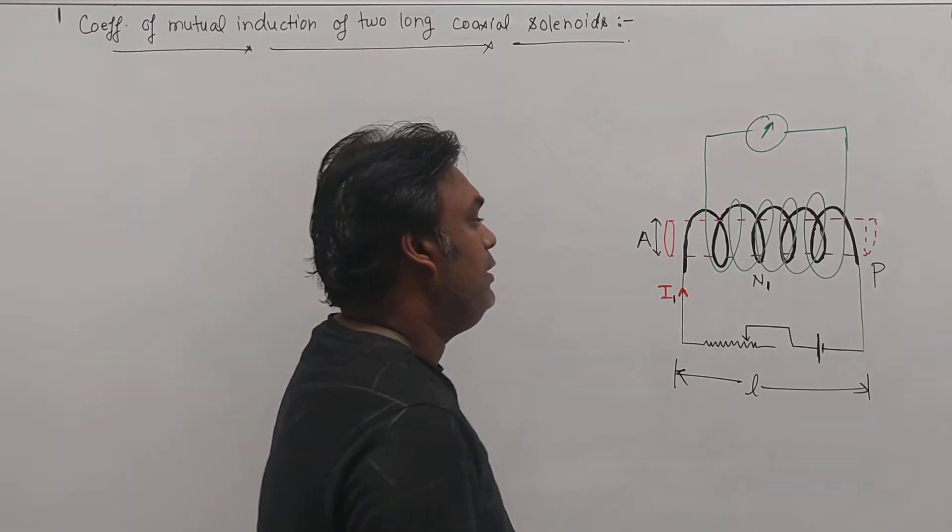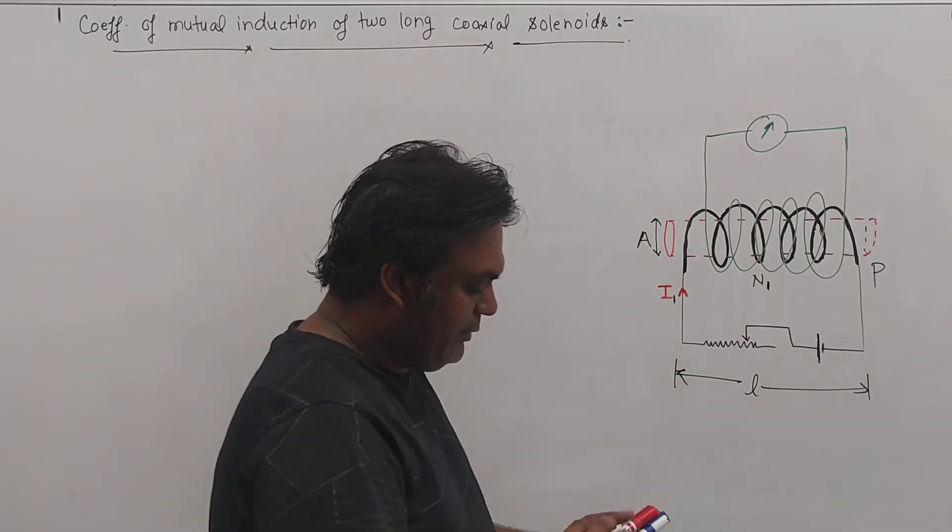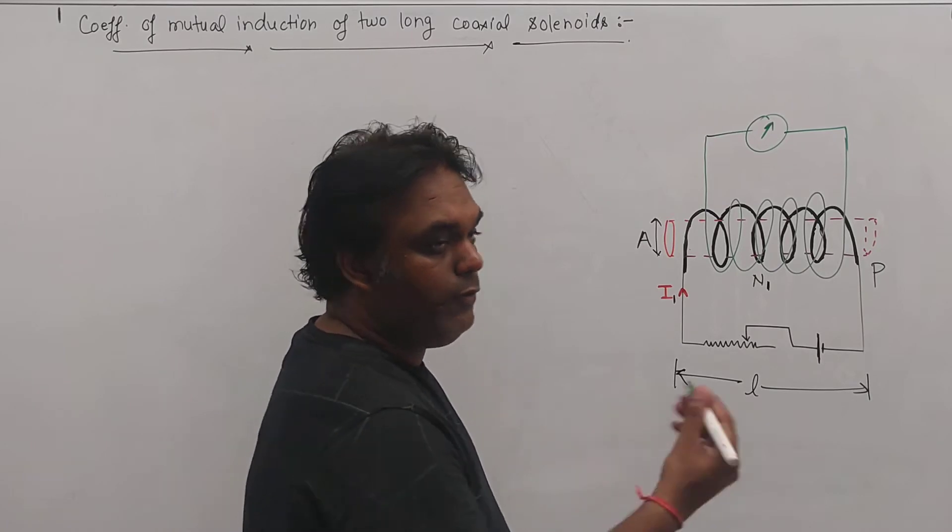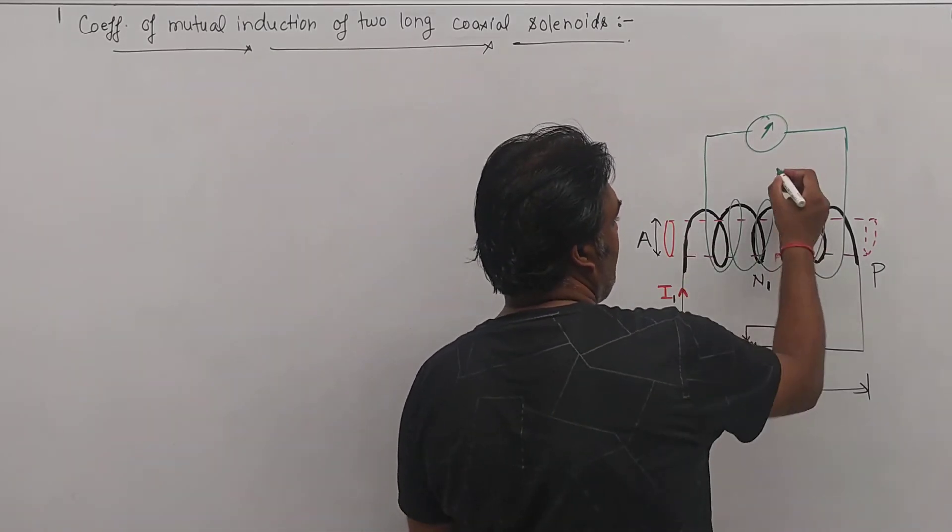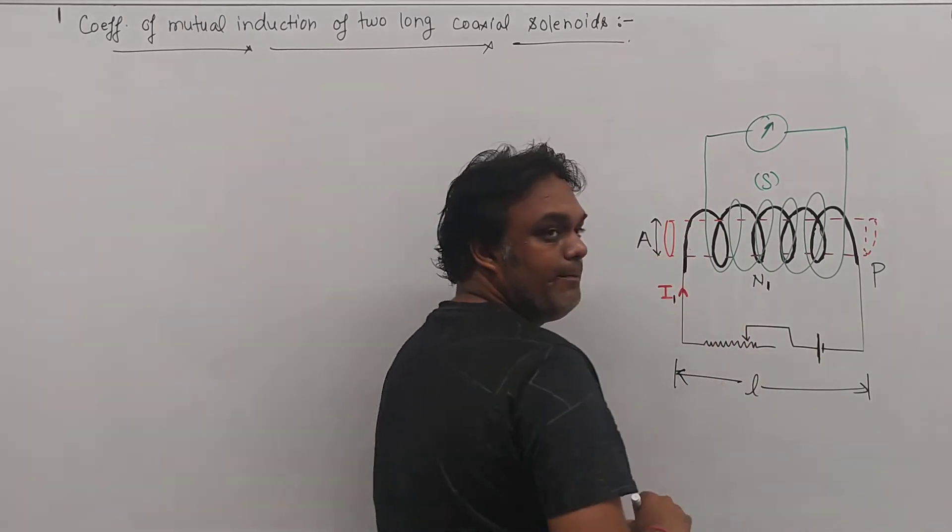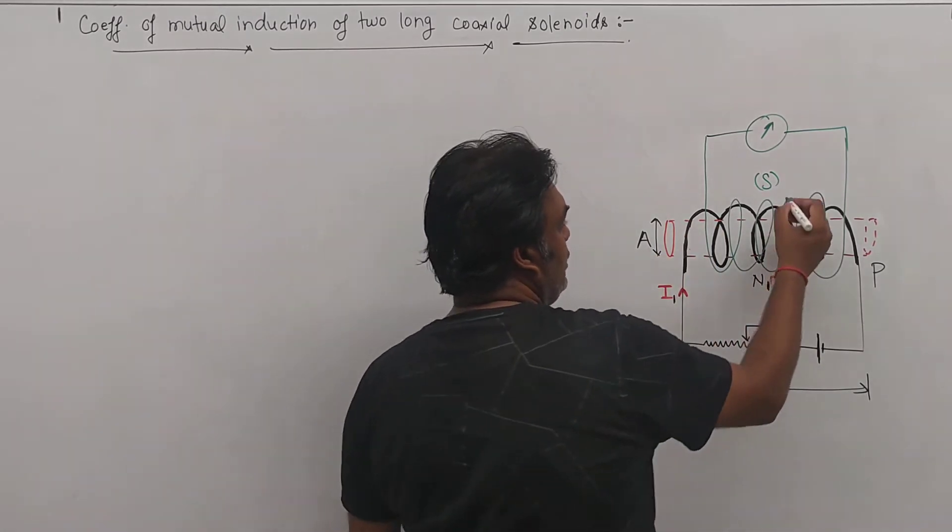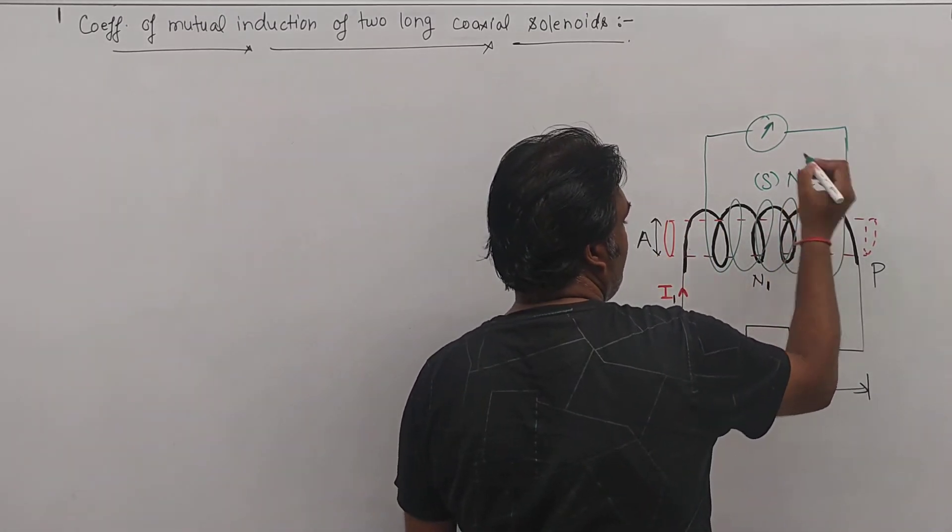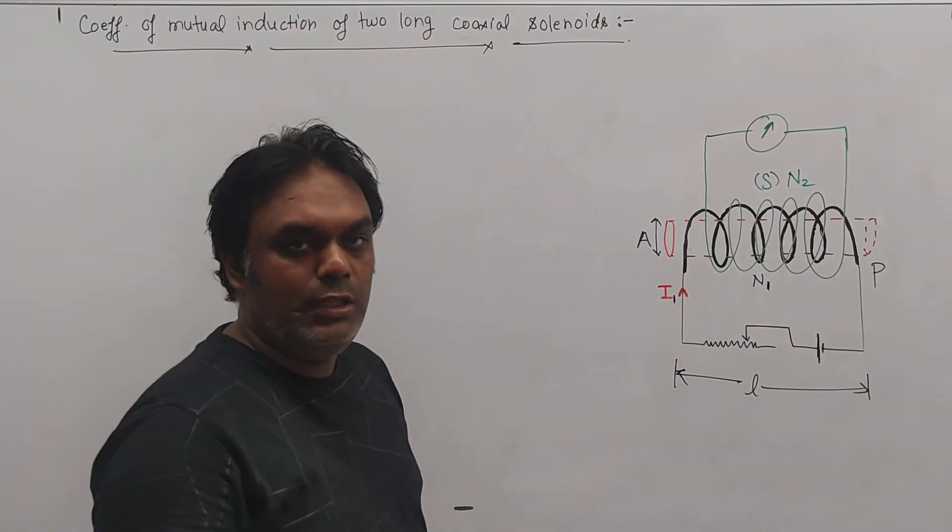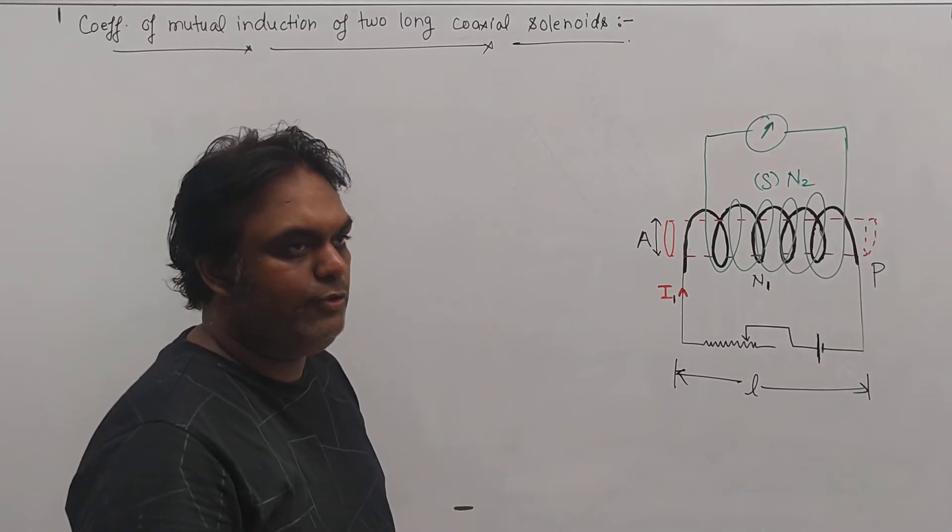Now this green color solenoid - the green color wires, they are making one more solenoid. It is termed as secondary solenoid. Let the number of turns be n2 in this solenoid.